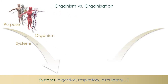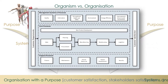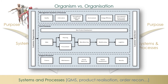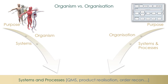The organisation is also designed with a purpose. An example could be customer satisfaction or stakeholder satisfaction, which could mean shareholders or employees. The organisation needs systems and processes. The diagram is a representation of key systems and processes in the organisation, used in long-range planning and understanding the context of the organisation. Examples include quality management systems, product realisation, and auto-reconciliation.